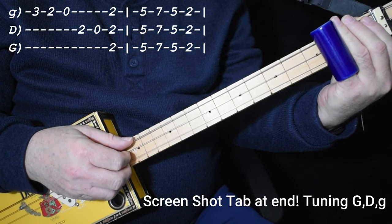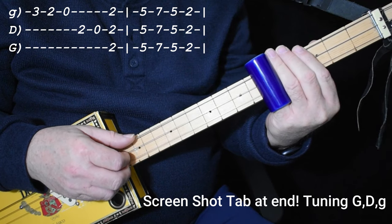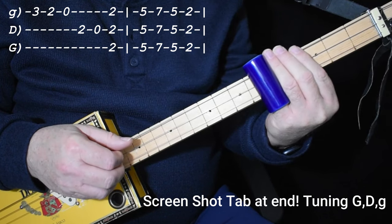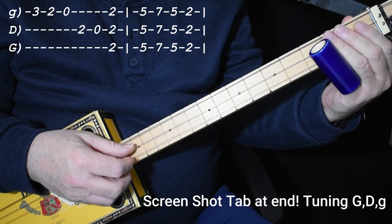And we play the same answer lick, but now we play it over an A chord. So that would be 5, 7, 5. Back to 2. And then back to the first lick, which is always the same.